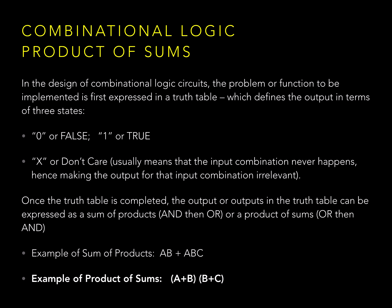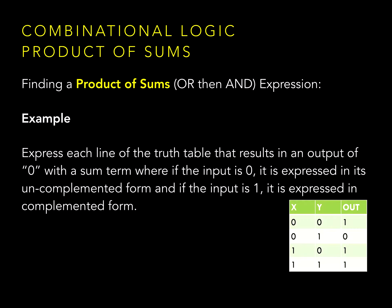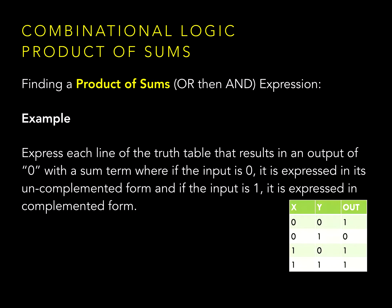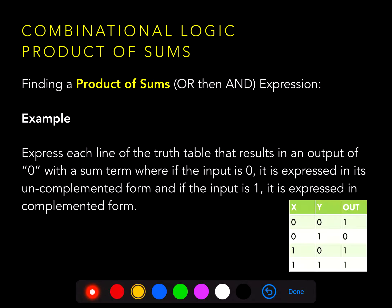Let's take a look at how product of sums works. In this truth table we have one line in the truth table that produces a zero. And the product of sums will only look at lines in the truth table that produce a zero. So here we'll go ahead and take a look at that one zero. And in order to express the term in that second line of the truth table, we'll use an OR to express the term.